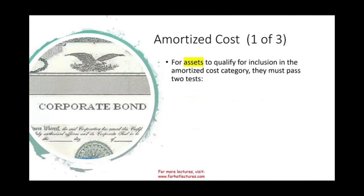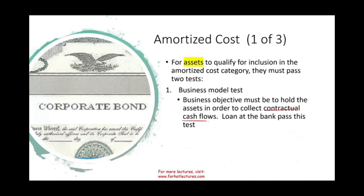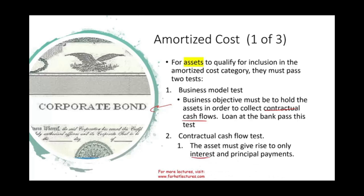For assets to qualify for amortized cost, they must pass two tests. First, the business model test: the objective must be to hold the asset to collect contractual cash flows — bonds and bank loans pass this, stocks do not. Second, the contractual cash flow test: the asset must give rise only to interest and principal, not dividends. So think of bonds as the primary financial asset reportable at amortized cost.